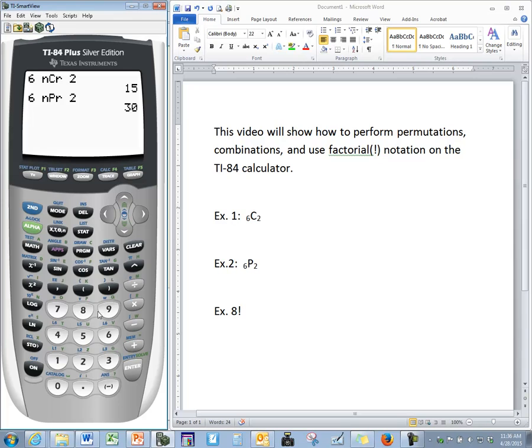And the last one, we want eight factorial. So eight, math, go over to the PRB formula. Option number four is our factorial sign.